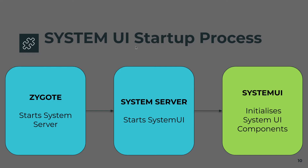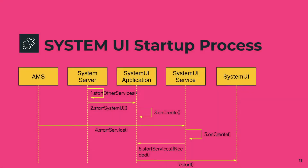Now let's dig a little deeper. Here is a sequence diagram of how System UI gets started. We have AMS, which is the Activity Management Service, the System Server which is responsible for starting many services including the System UI app, and then the System UI Application class and the System UI Service class.